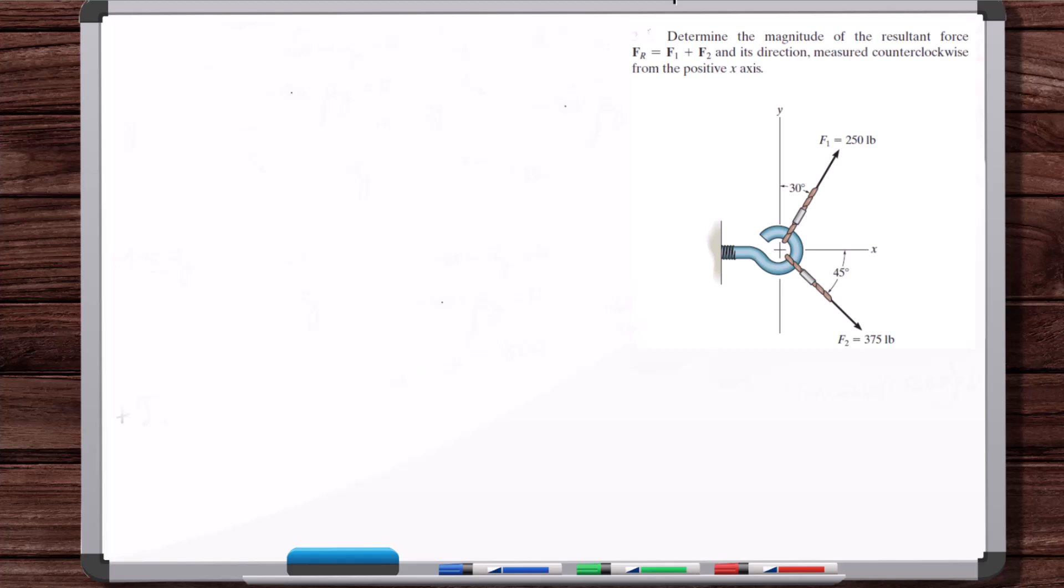You learn a lot of the geometry involved in working with vectors, and it also gives you more of an intuitive feel for force vectors. Let's get started. Determine the magnitude of the resultant force, F1 plus F2, in its direction measured counterclockwise from the positive x-axis. So we want to find the resultant force of the sum of these two vectors. It gives us an x and a y-axis with the orientation of the force vectors to those axes, but we're practicing doing this graphically.